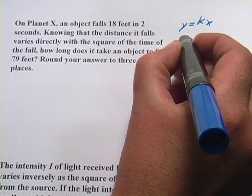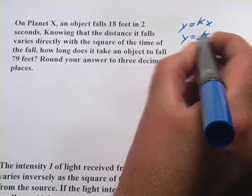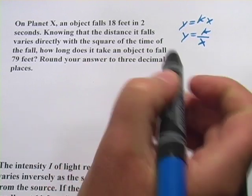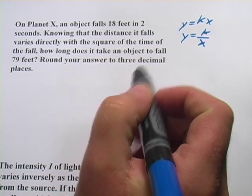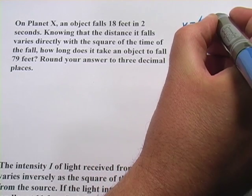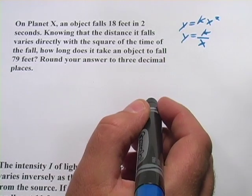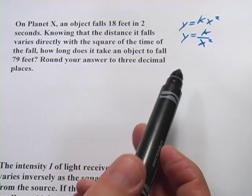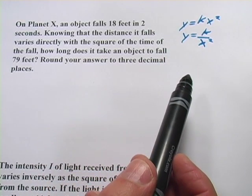With inverse variation, it's almost the same. It's just that we have y equals k over x. Now, in the case of these problems, because y is going to vary with the square of x, it's just y equals kx squared, or y equals k over x squared. So those are the formulas for direct and inverse variation squared.